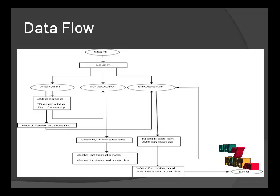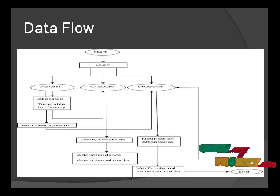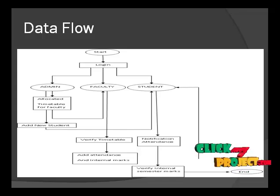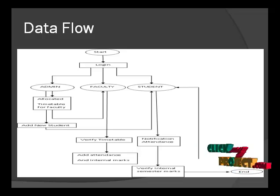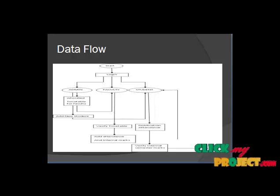In the student process, students have to register their name and password in new user registration. Using their particular username and password, they can then login. Students can view their attendance for all periods and average attendance for a month. The online student management system helps to protect the database; it is easy to store data with high confidentiality. The system has two types of accessing modes: administrator and user.